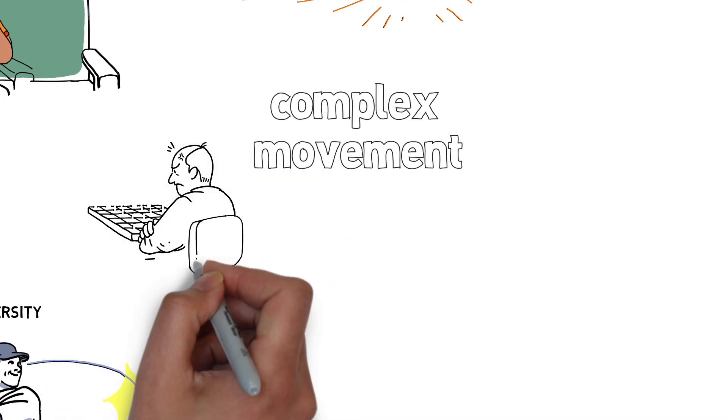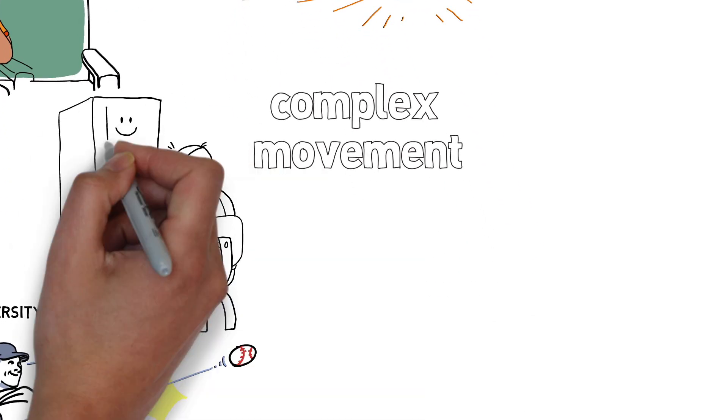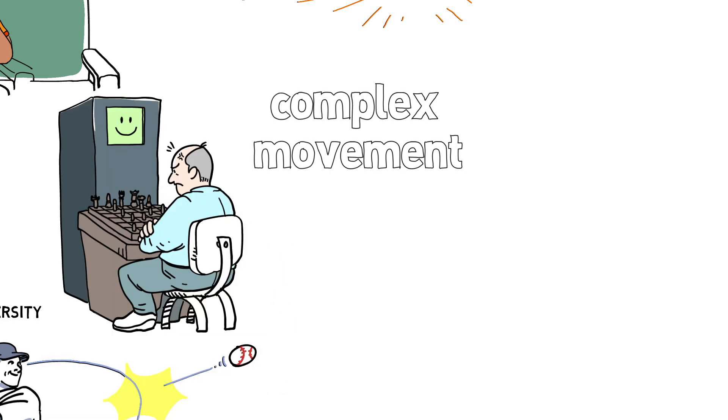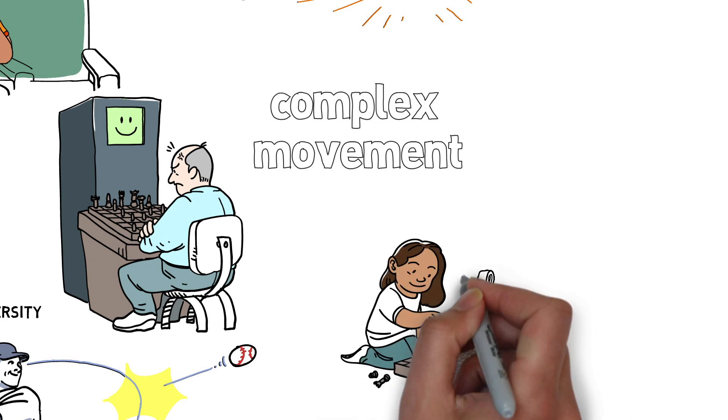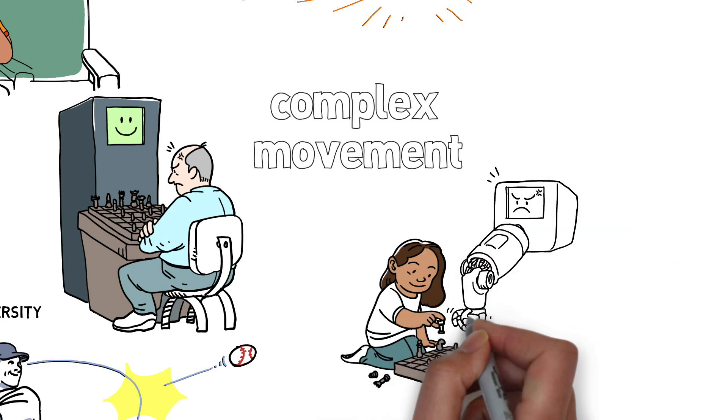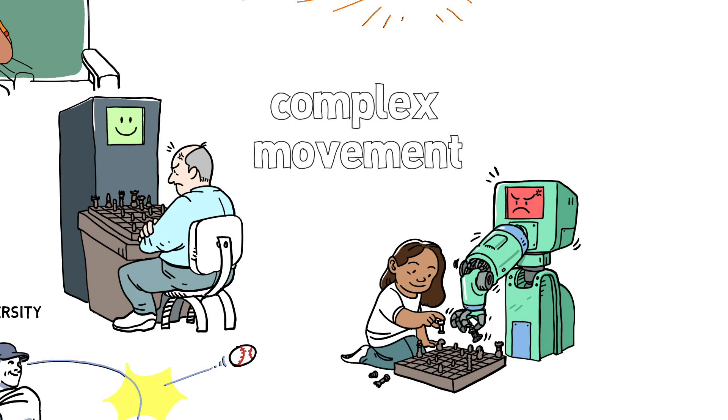But moving is a really complex problem and I can illustrate this if you think about how well we do compared to machines. We can now build computers that can beat the world's best chess players, but we can't yet build a robot that can manipulate a chess piece with the dexterity of a five-year-old.